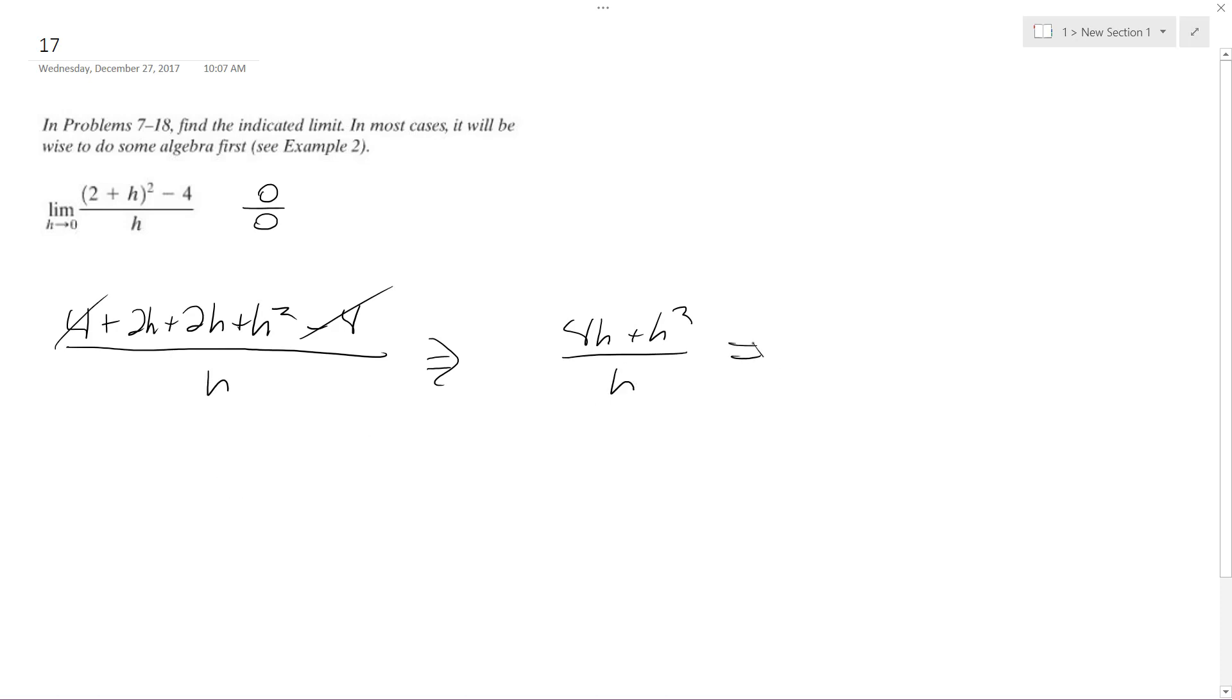If you look, I can factor out an h, so I get h quantity 4 plus h over h. The h's cancel out.